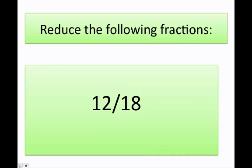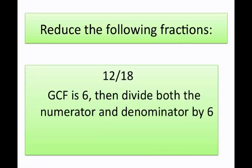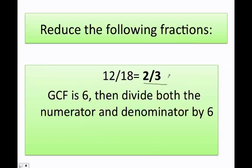When can I use the greatest common factor? Let's say they give me the fraction 12 over 18. We found that the greatest common factor of 12 and 18 is 6. That means I can divide both the numerator and the denominator by 6. 12 divided by 6 is 2, and 18 divided by 6 is 3. Therefore, 12 over 18 is the same as 2 over 3.